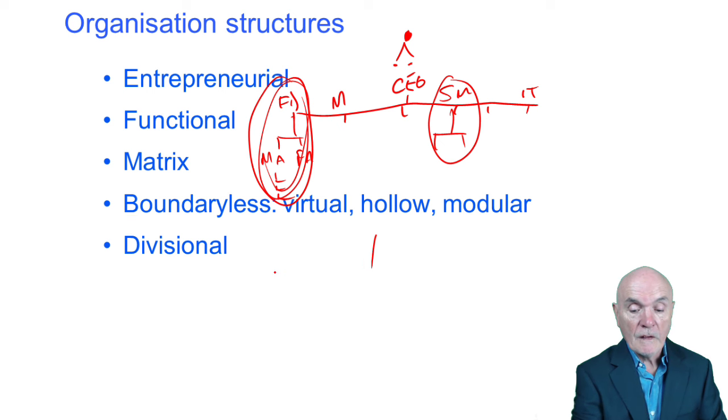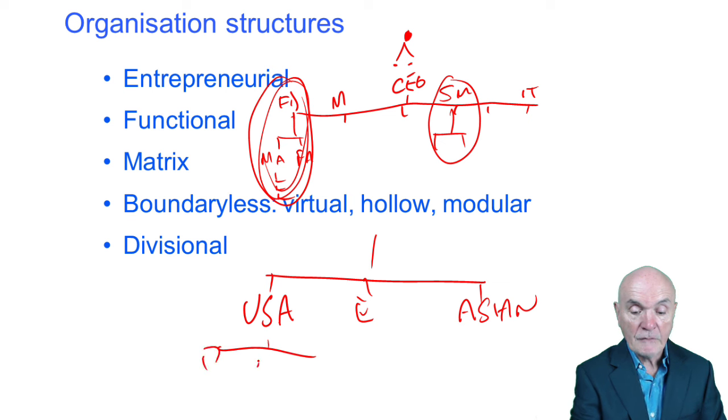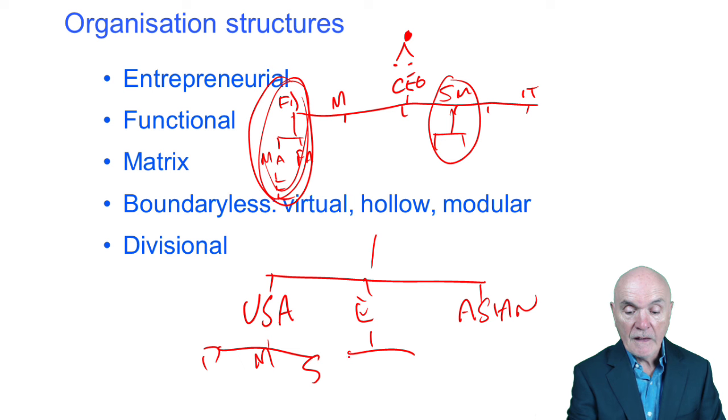And what divisional organizations do is they would say, well here's our American division, here's our European division, here's our Asian division. Within that, you know, we would have purchasing, we'd have manufacturing, we'd have sales and so on going through. So there's a certain duplication going on. We now have several manufacturing plants, several sales and marketing, several purchasing departments.